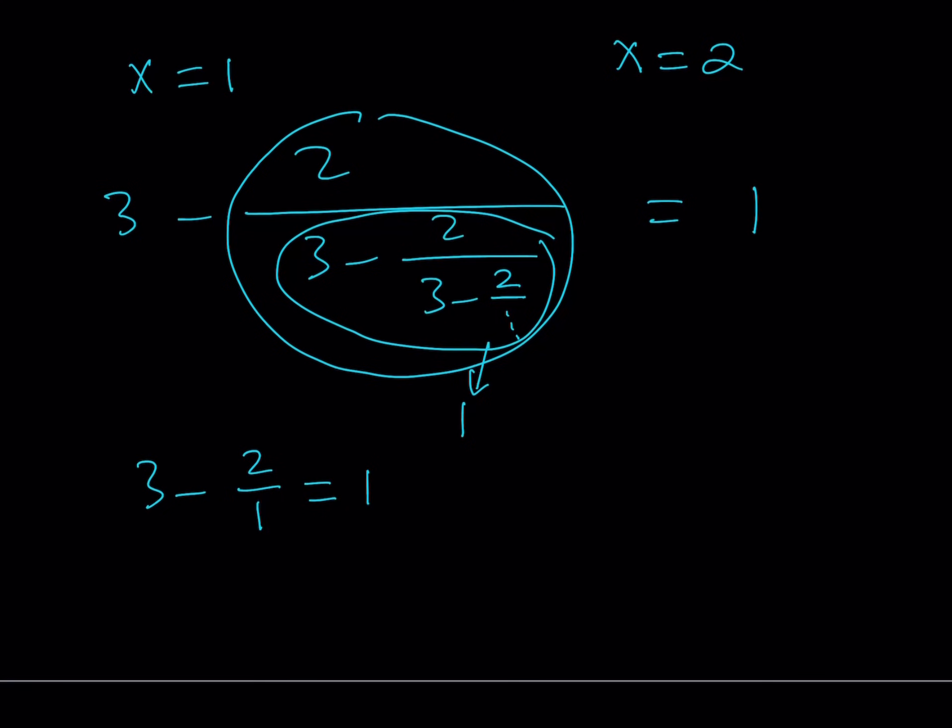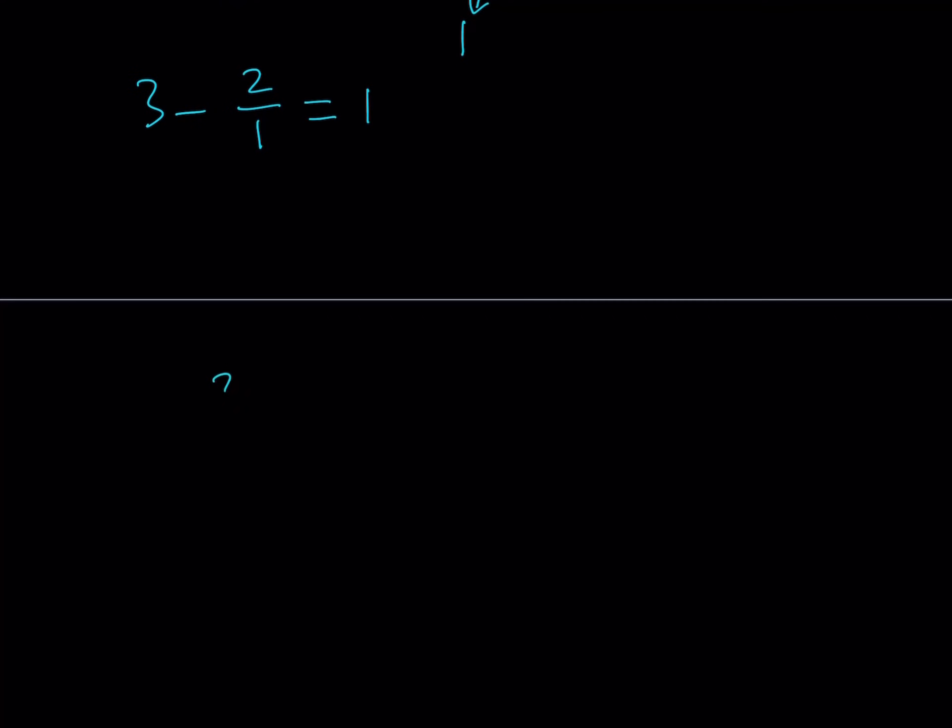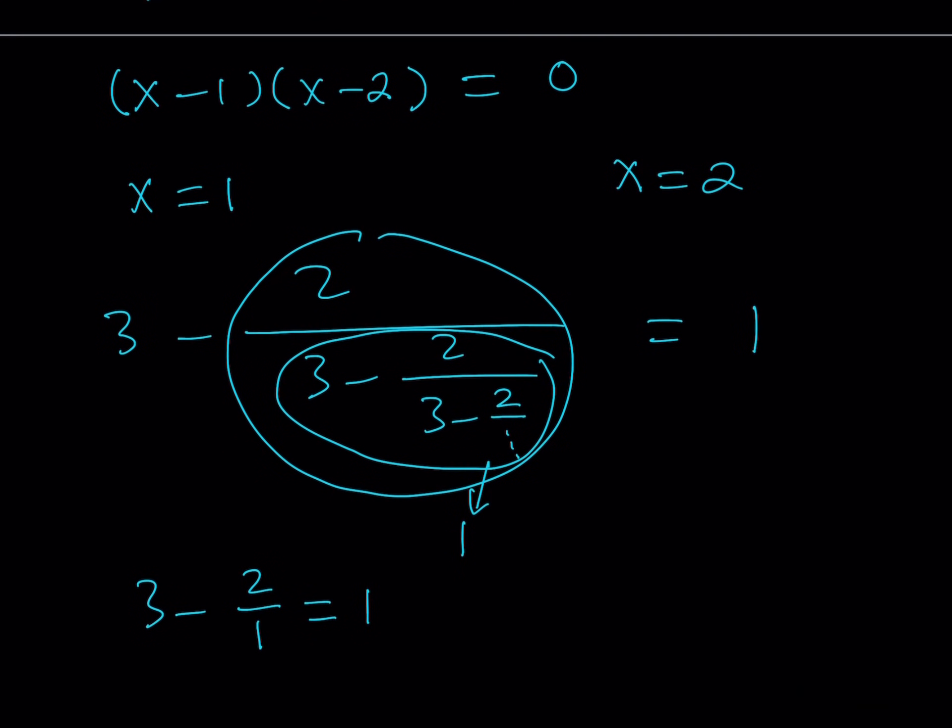Let's check x equals 2. For x equals 2, I'm going to rewrite my expression one more time: 3 minus 2 over 3 minus 2 over 3 minus 2 over dot dot dot. So my claim is that this answer is equal to 2. Is that possible? Well, if that's 2, then the denominator is also supposed to be a 2. Well, let's see if that's true. Well, 2 divided by 2 equals 1. 3 minus 1 equals 2. So that seems to be true as well. So both of these answers seem to satisfy this equation: x equals 1 and x equals 2.